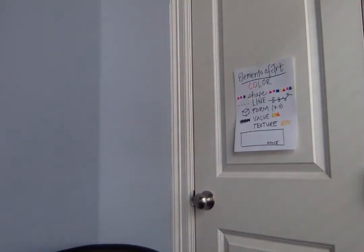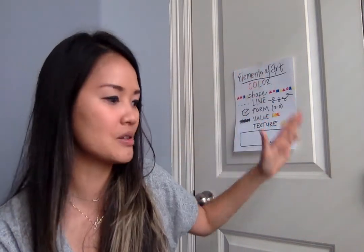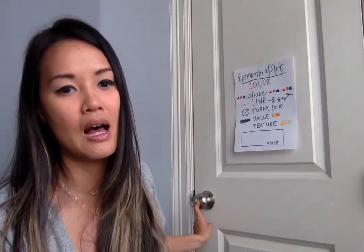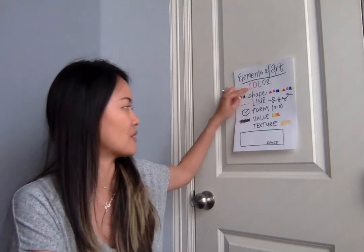The second part of your assignment is an elements of art scavenger hunt. I want you to find examples of each element. For color, I found some jelly beans — they're always very colorful. For shape, look around — doors are typically rectangles and doorknobs can be circles. You can go around and find different shapes. The first three I always remember easiest: color, shape, and line. Line makes up all art.